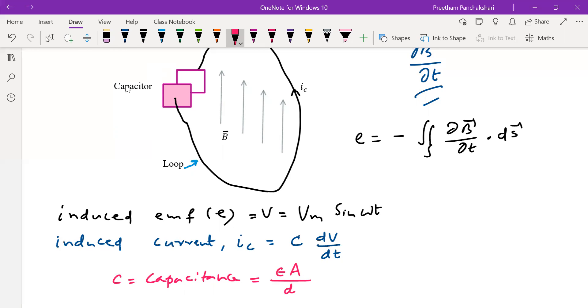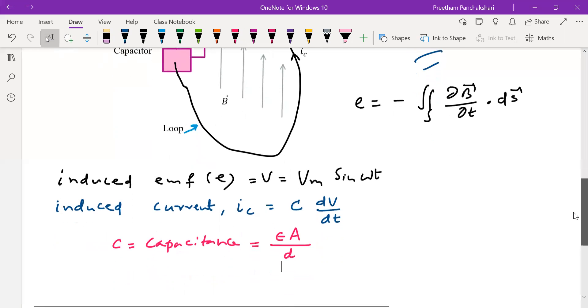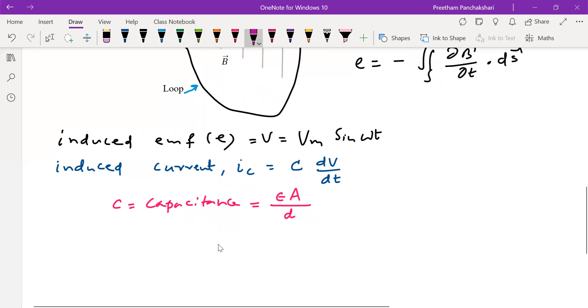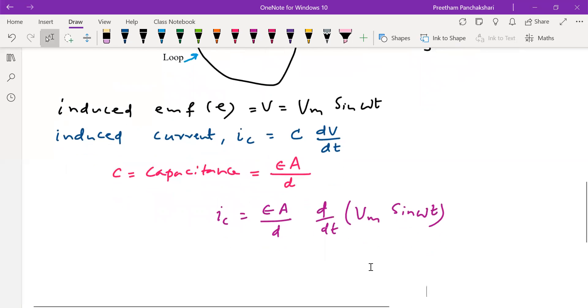So now this conduction current can be further expanded as C means it is epsilon A by d times differentiation of V. V is assumed as a sinusoidal quantity that is Vm sine omega t. So after differentiation, Vm is constant which comes out, differentiation of sine is cos omega t so omega also comes out. So what happens here is epsilon A by d times Vm times omega cos omega t.